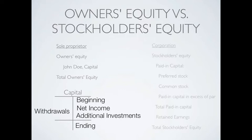A stockholders' equity section — we've talked about two things that show up: common stock and retained earnings. But now we can see that there's a little bit more involved.